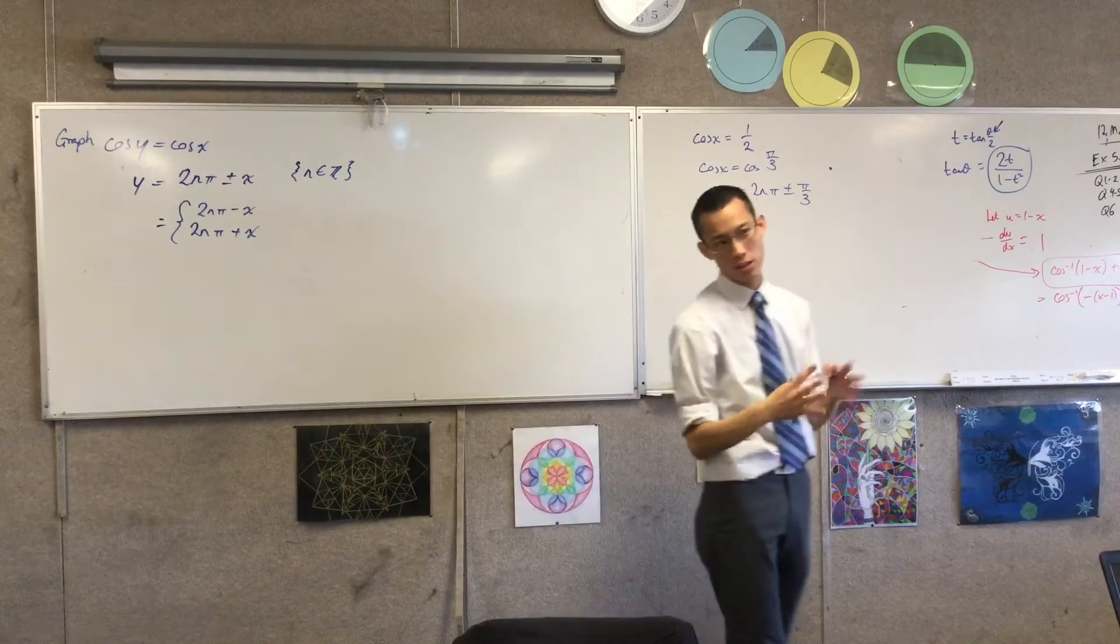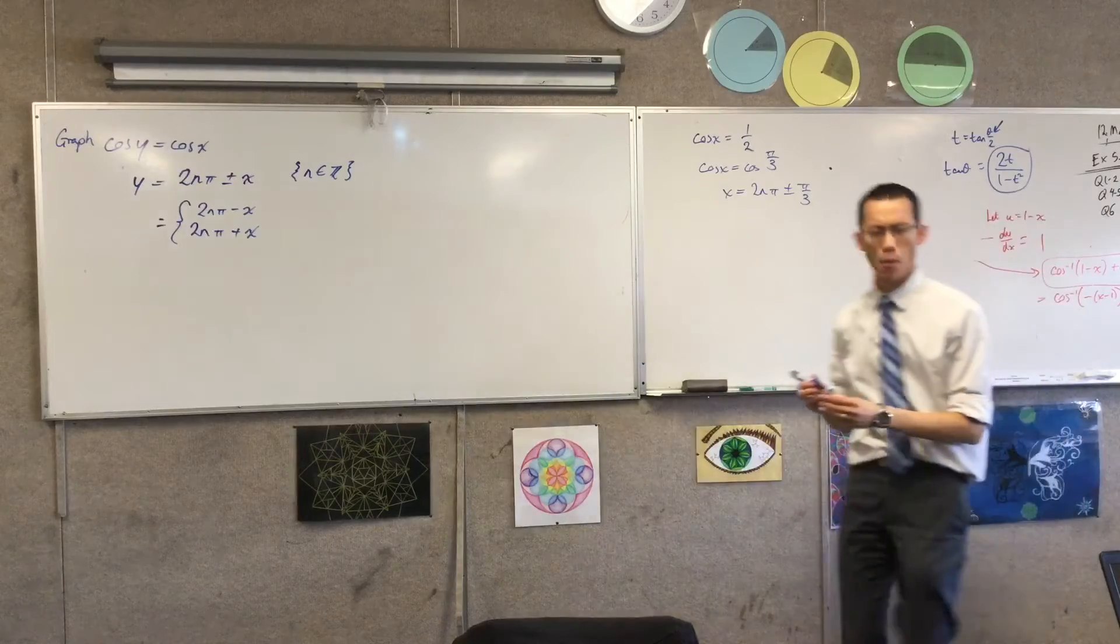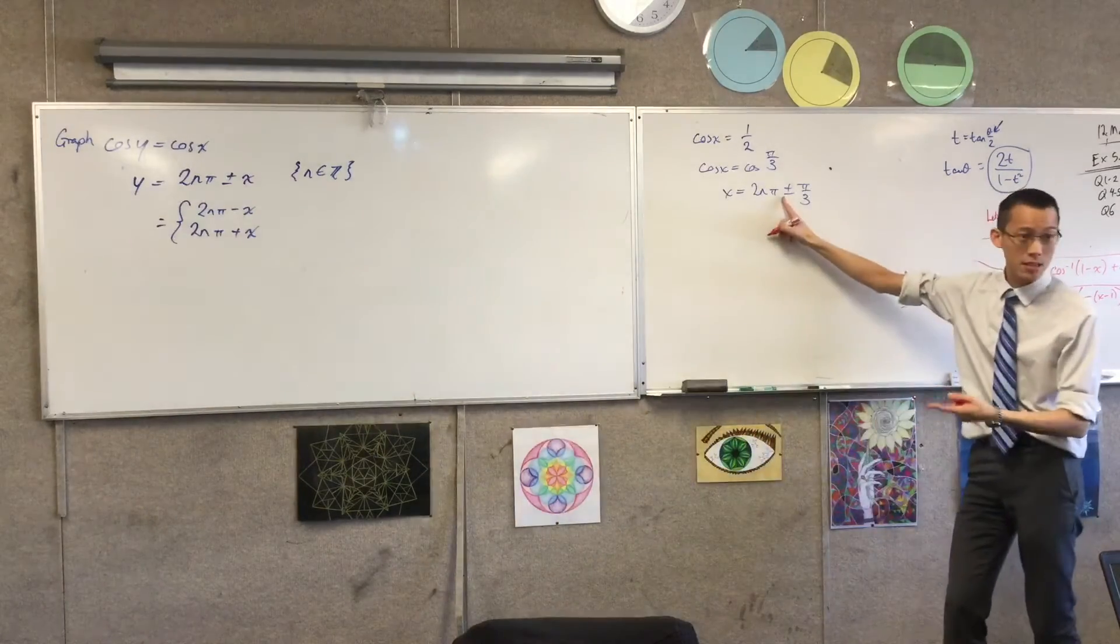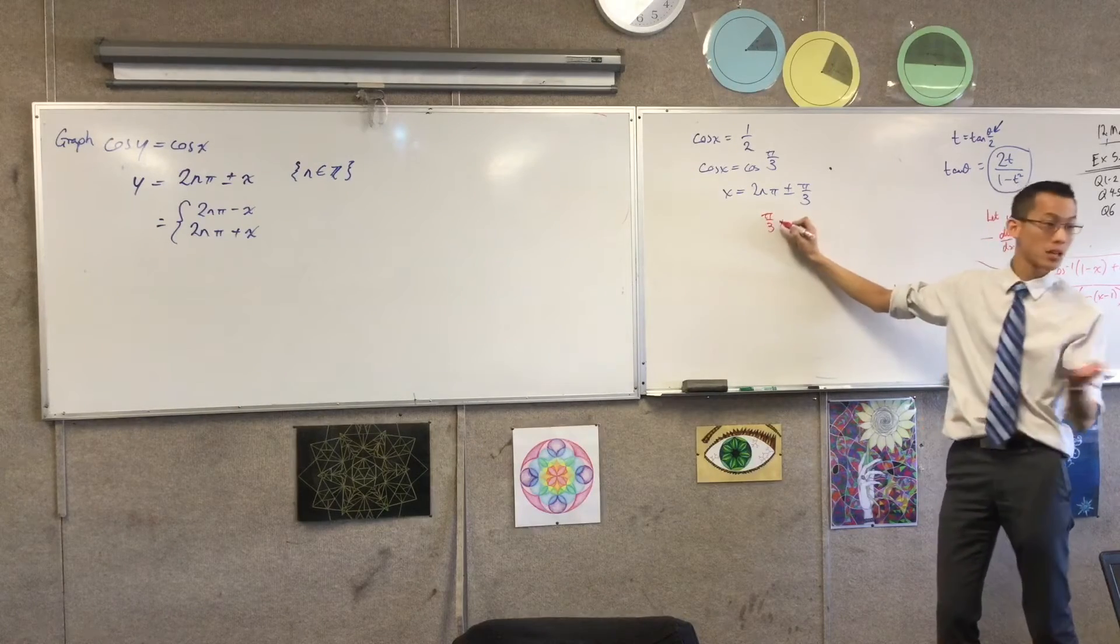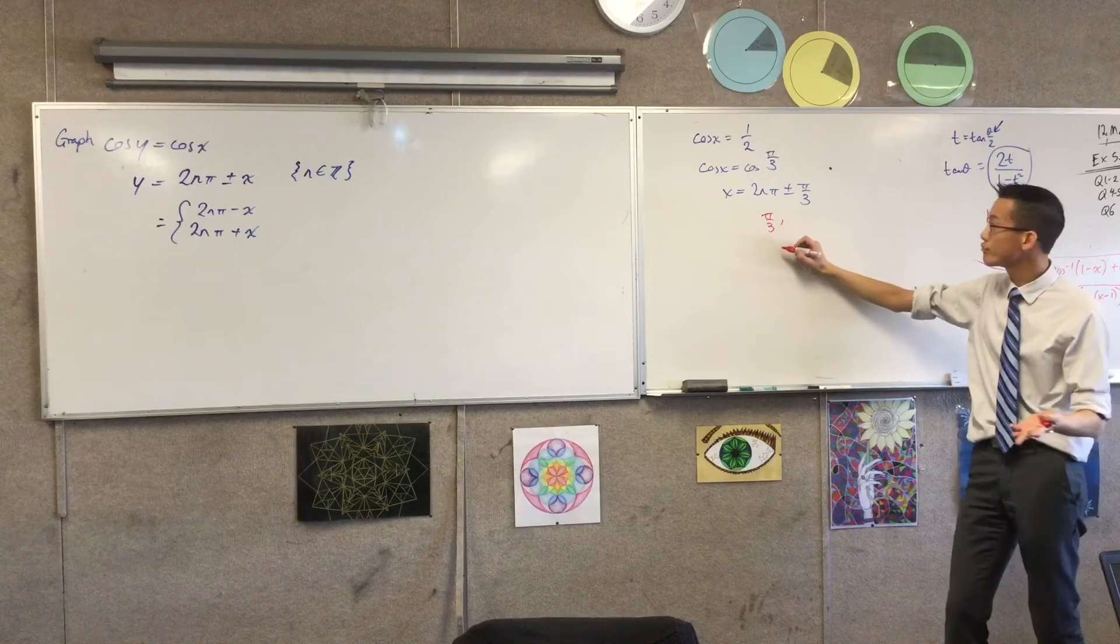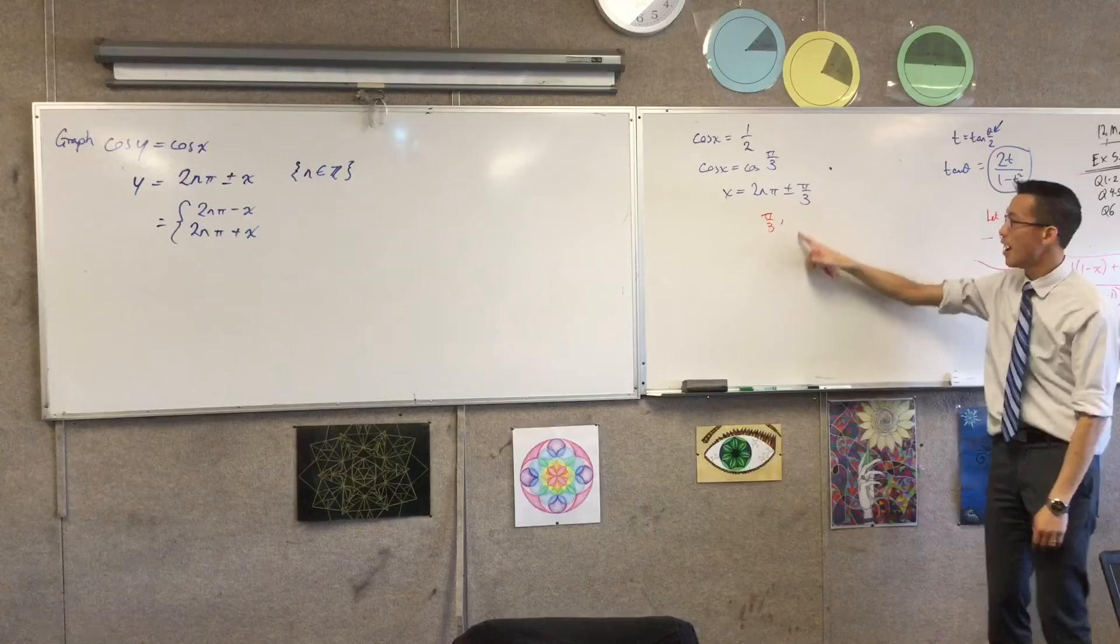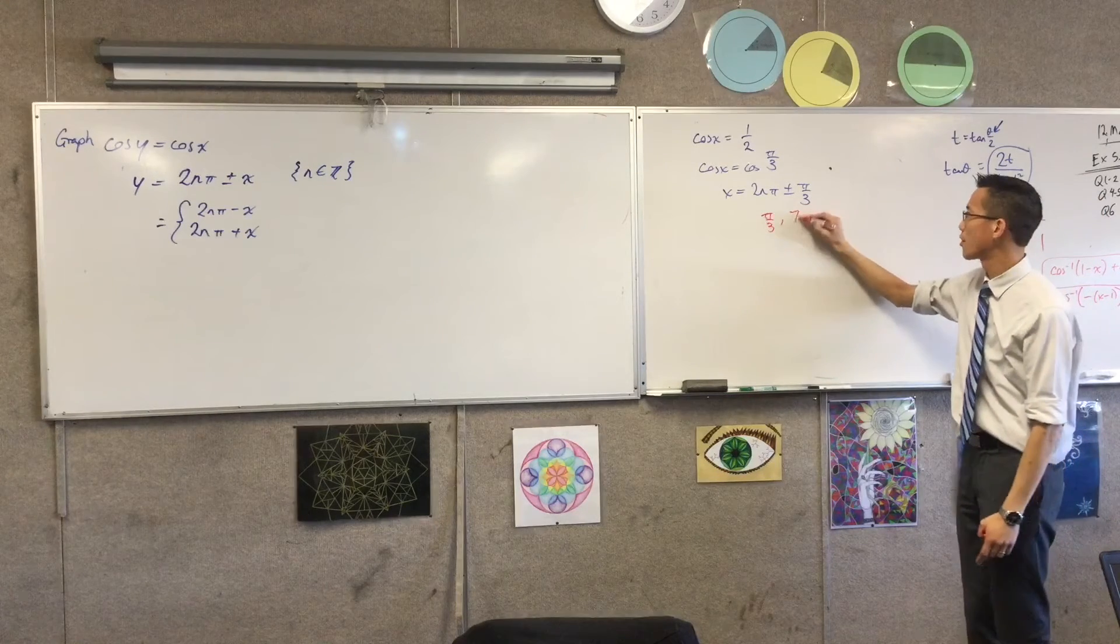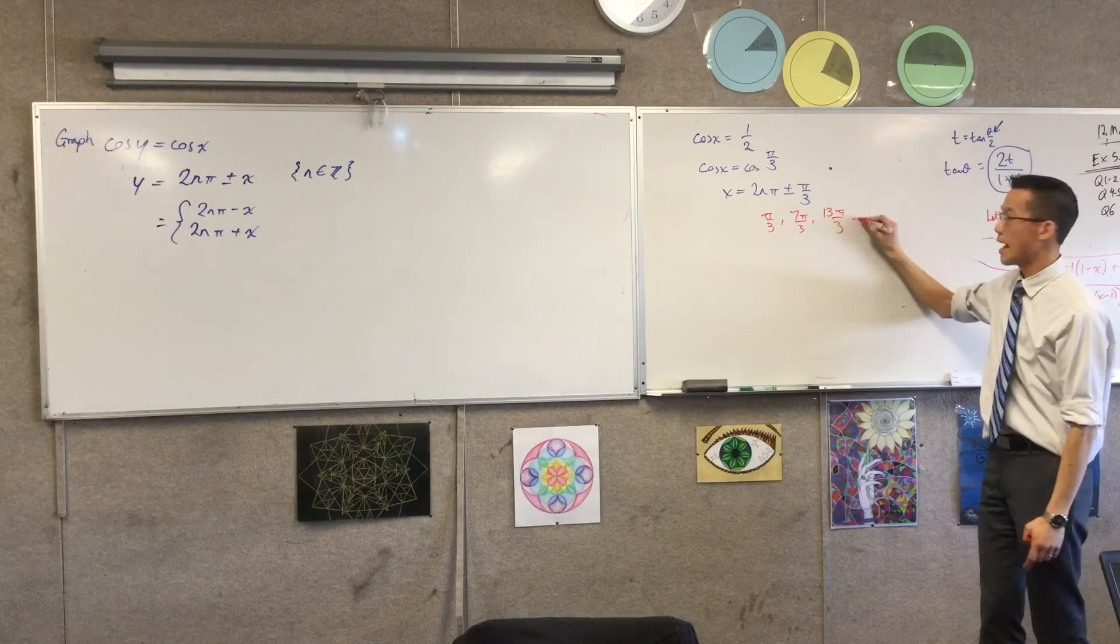So what do these look like? Just like before, when I said, this is what your general solution is, but what are the actual values that are in here? Well, in this case, the first one would be n equals zero, which is π/3. What would the next one be? For n equals one, I'm going to go forward, because again, this is two lists, right? For n equals one, it's 2π plus that, which is 7π/3, and then there's 13π/3, and so on.